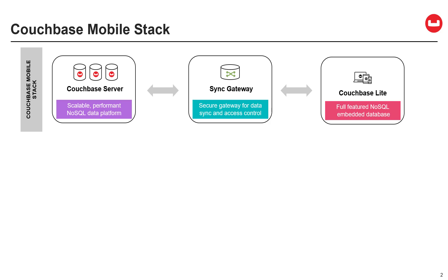On the left, we have Couchbase Server, which is our flagship modern database server with support for SQL, Analytics, Full Text Search, and Eventing. On the right, we have Couchbase Lite, which is the embeddable version of Couchbase for mobile and custom embedded devices. Sync Gateway sits in between and is responsible for secure data sync, routing, and access control between mobile clients and server tiers. These capabilities can be deployed two ways.